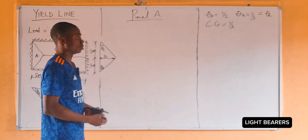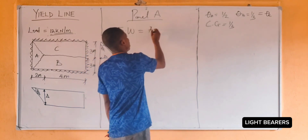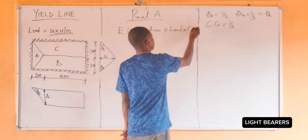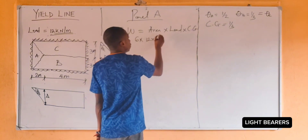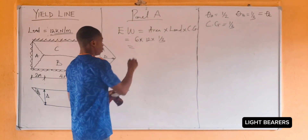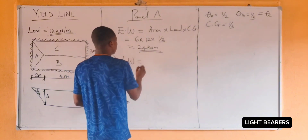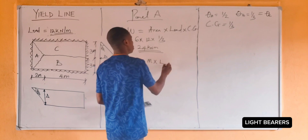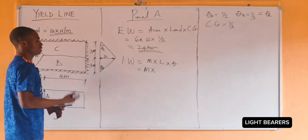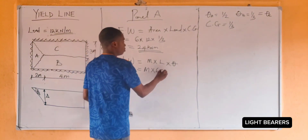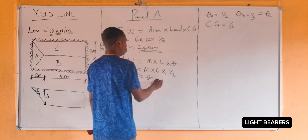Now let's find the external work done. The internal work done for panel A is moment multiplied by length multiplied by theta delta. So we have M multiplied by the length of A, which is 6, multiplied by theta A, which is 1 over 2. So we have 6M divided by 2, which is 3M.